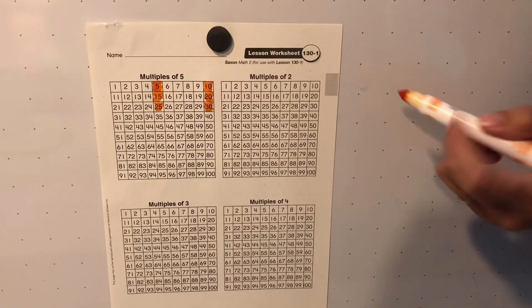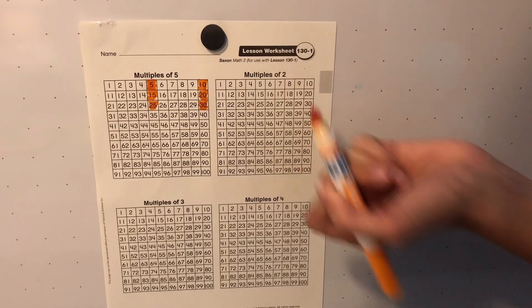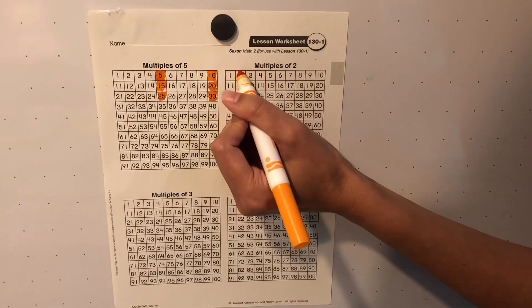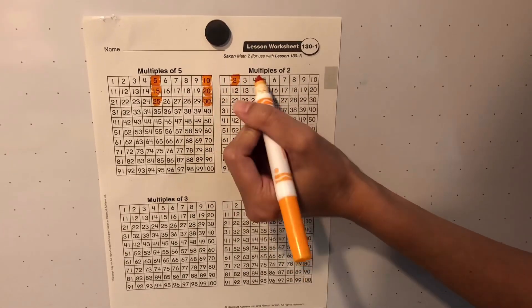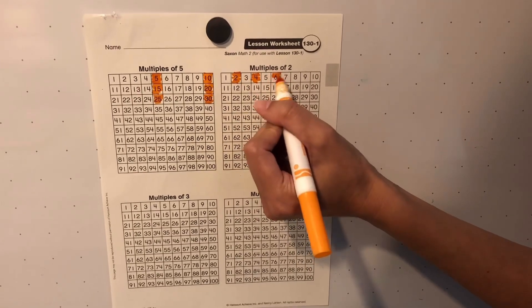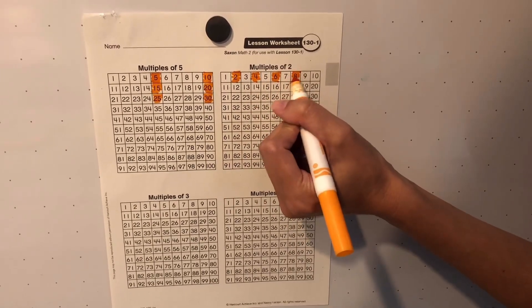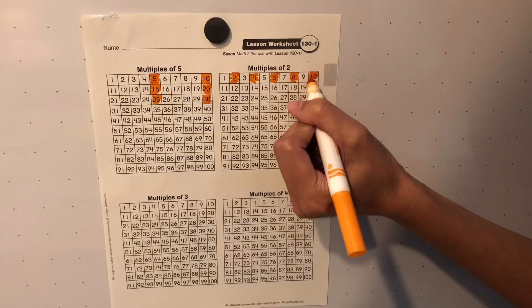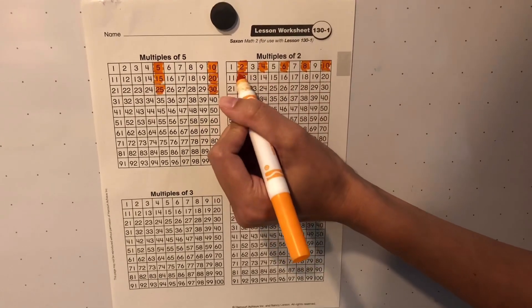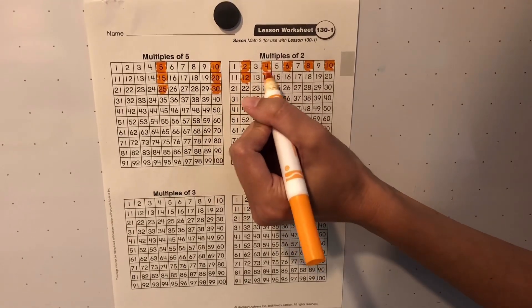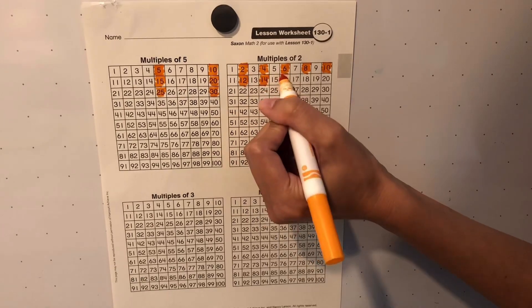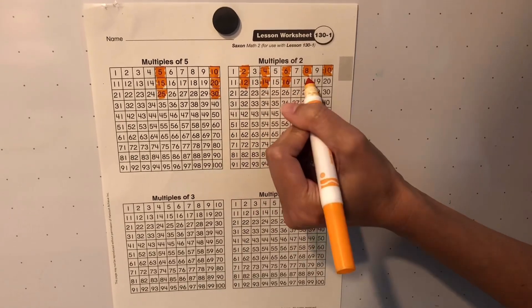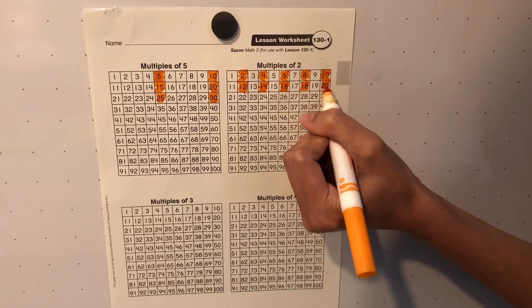Let's start our multiples of two. So multiples of two, I'm going to count by twos: two, four, six, eight, 10, 12, 14, 16, 18, 20.